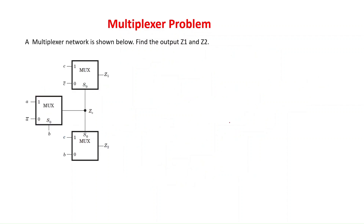Coming to the second problem: we have 3 multiplexers and the size of each multiplexer is 2×1. This circuit consists of 2×1 multiplexers and there are two outputs, Z1 and Z2. We will start from the leftmost multiplexer. The expression of a 2×1 multiplexer is Z = S'·I0 + S·I1, where 0 corresponds to input I0 and 1 corresponds to input I1.